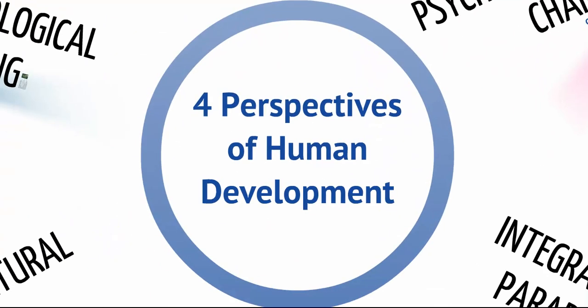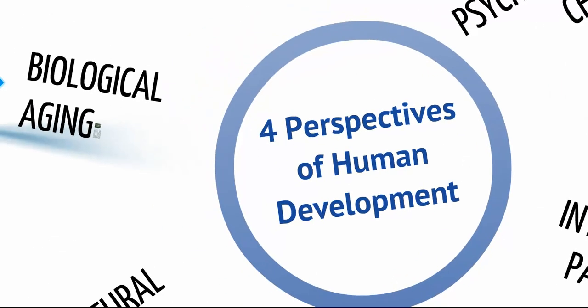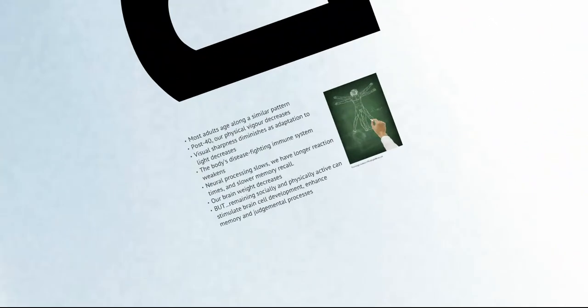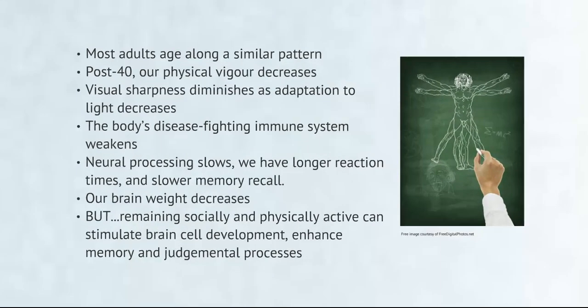The psychology of human development really has four major perspectives which intertwine: biological, psychological, sociocultural, and finally an integrated paradigm. From a biological perspective, most adults develop or age along a similar pattern. In middle age, post-40, our physical vigor decreases. Our visual sharpness diminishes, our body's disease-fighting immune system weakens, and our neural processing slows. We tend to have longer reaction times and slower memory recall, and our brain weight decreases so that by age 80, we have about 5% less brain mass.